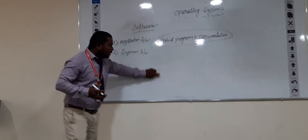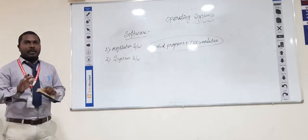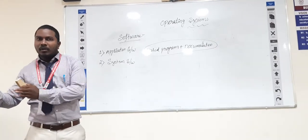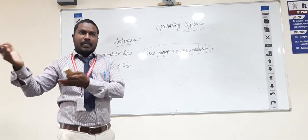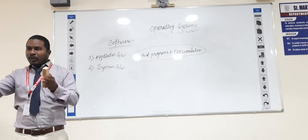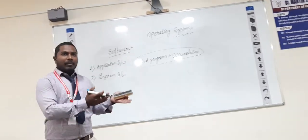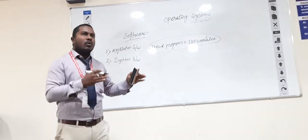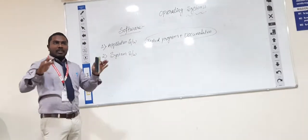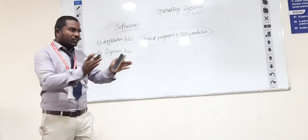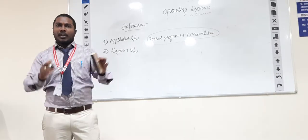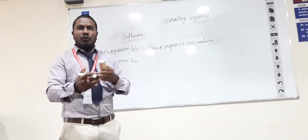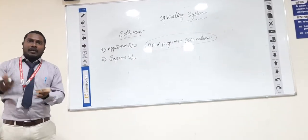System software is used to manage the whole computer and coordinates all software components. For example, if you want to purchase a new computer, you go to the market and purchase hardware — CPU, monitor, cabinet, mouse. They give you only raw materials. After assembling all those hardware components, your system is ready. But you cannot interact directly with the computer hardware — it is very difficult. In that situation, you need to install system software.